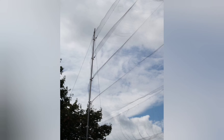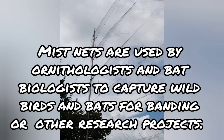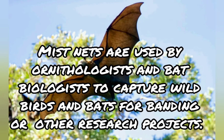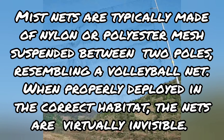The first method is mist nets. Mist nets are used by ornithologists and bat biologists to capture wild birds and bats for banding or other research projects. Mist nets are typically made of nylon or polyester mesh suspended between two poles, resembling a volleyball net. When properly deployed in the correct habitat, the nets are virtually invisible.